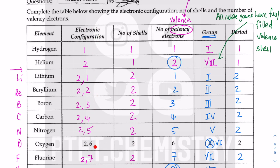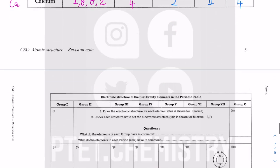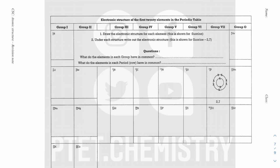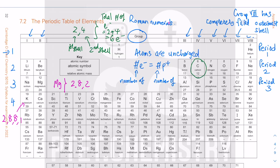I would recommend using the periodic table wisely and practicing electronic configuration. Once you can get the electronic configuration from the periodic table, you can get free marks by drawing the electron shell diagrams. That's it for this lecture tutorial — ask any questions you have, and don't forget to subscribe and follow me on Instagram, Facebook, and Twitter. See you in the next video!